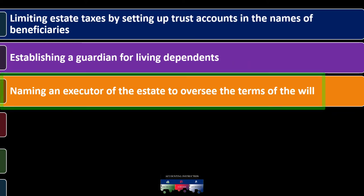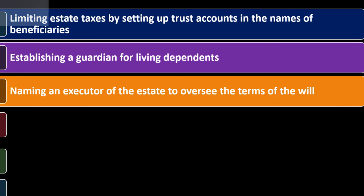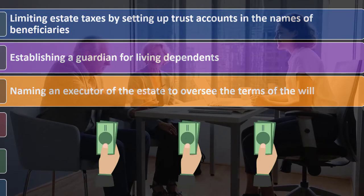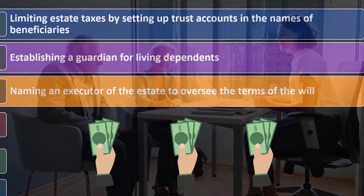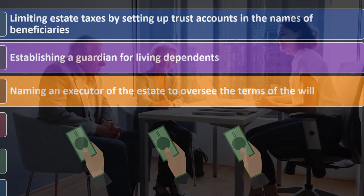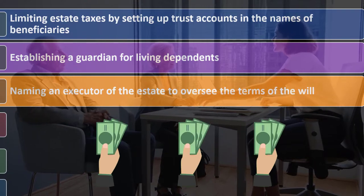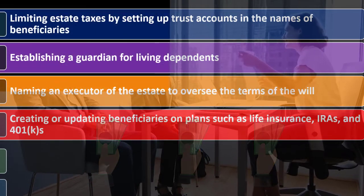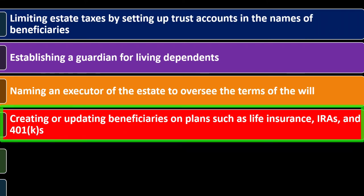Other tasks include naming an executor of the estate to oversee the terms of the will. Since you'll be deceased, someone has to execute your wishes, so you want someone you can trust to carry out what you want. Also: creating or updating beneficiaries on plans such as life insurance, IRAs, and 401(k) plans.